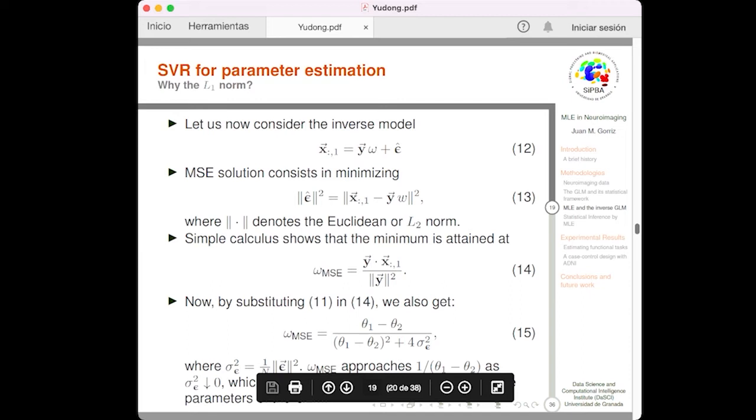Observe how, if the variance of the noise is small, tends to 0, then MSE regression estimates the parameters of the GLM, the optimal parameters. The optimal parameters is 1 over theta 1 minus theta 2.